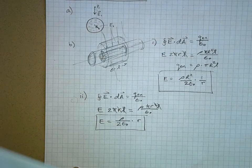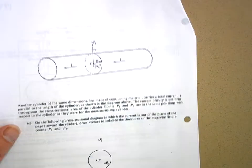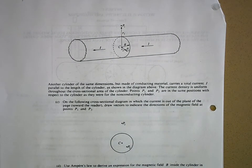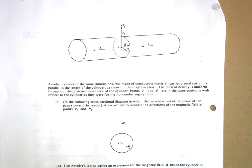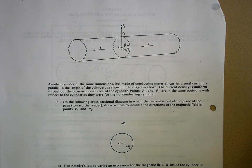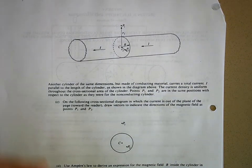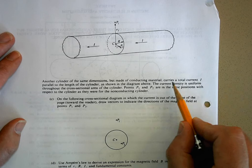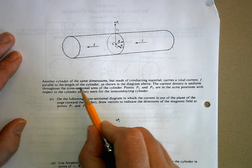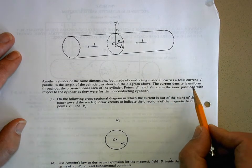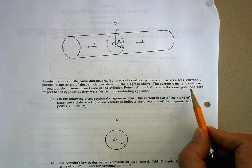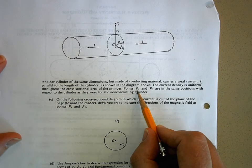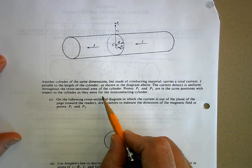All right, let's do the next one, which is part C. Now, part C has the same drawing, but it's a completely different problem. Let's take a look. Because now we're dealing with current. We're not dealing with the static electric charge anymore. See, before we were using Gauss's law for electrostatics, and then now we're going to use Ampere's law. It says, another cylinder of the same dimensions but made of a conducting material carries a total current I parallel to the length of the cylinder as shown in the diagram above. The current density is uniform. Oh, that's nice. When the current density is uniform... The current density is uniform throughout the cross-sectional area of the cylinder. Points P1 and P2 are in the same positions with respect to the cylinder as they were for the non-conducting cylinder.